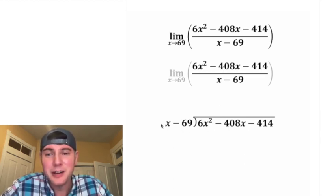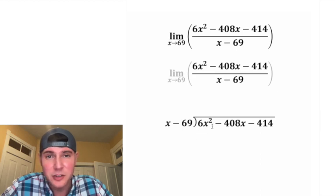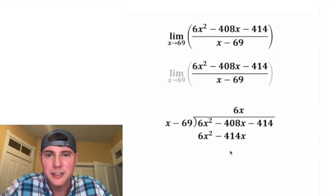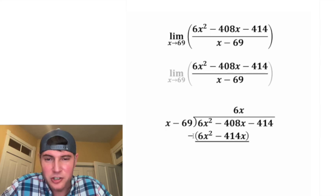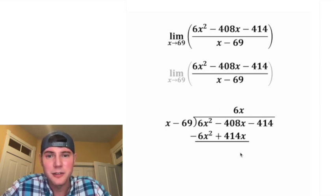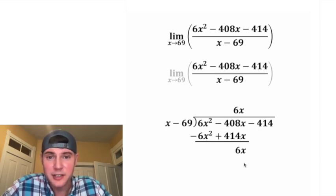First step, we want to know how many times does x go into 6x squared. Well, it'll go in 6x times because 6x times x gives us 6x squared. And then we also want to do 6x times the negative 69, which gives us negative 414x. After we multiply this, we want to subtract these. And this negative is going to distribute both to the negative 6x and make the 414x positive. 6x squared minus 6x squared cancel each other out, and negative 408x plus 414x is 6x.